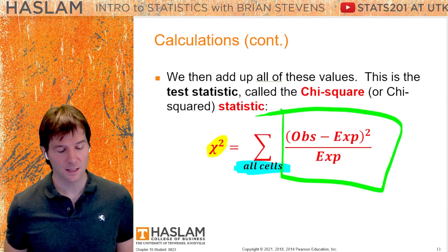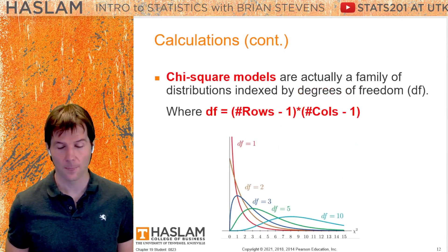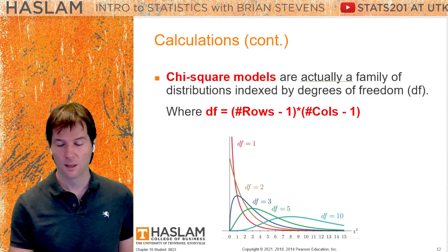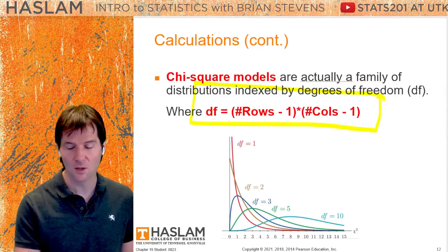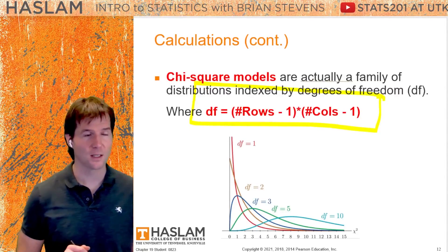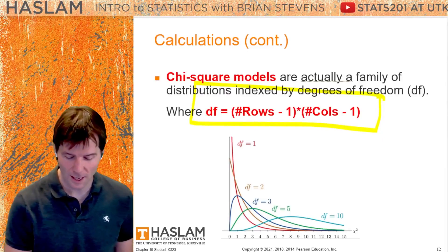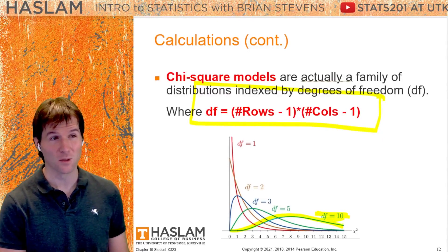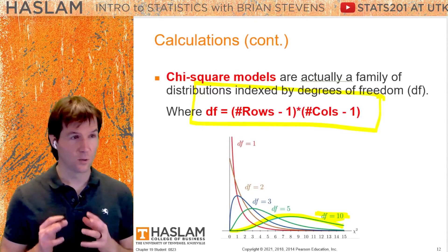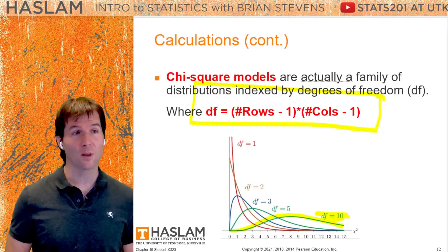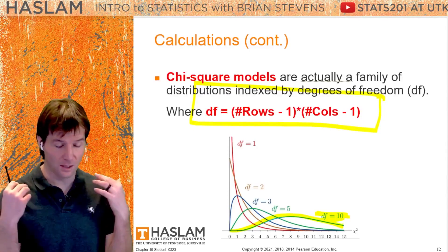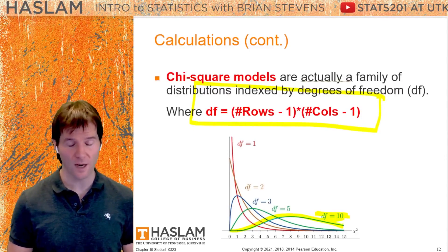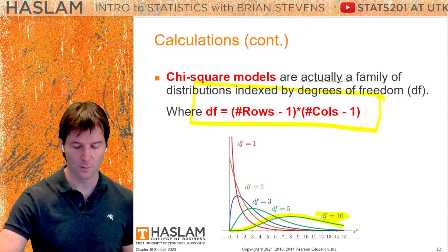The chi-squared is a bit like the T because it has degrees of freedom. The degrees of freedom are rows minus one times columns minus one. Notice that the chi-squared becomes more like the normal with higher degrees of freedom. The degrees of freedom determine the shape — a chi-squared with one degree of freedom is very right-skewed, versus chi-squared with higher degrees of freedom, which is more normal.